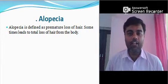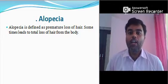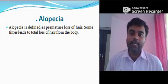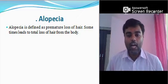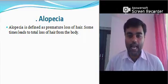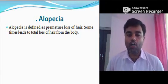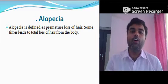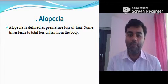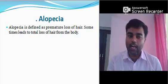Alopecia, in layman's terminology, you can call it baldness. Alopecia is defined as premature loss of hair. Sometimes it leads to total loss of hair from the body. It is not only from the scalp — the whole body patient can get hair loss.